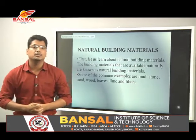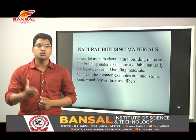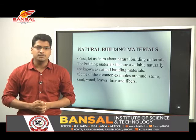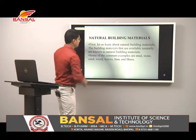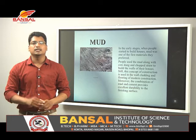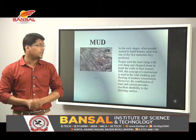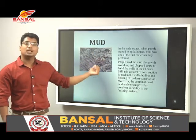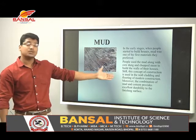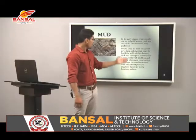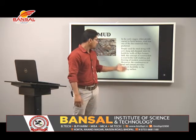Natural building materials are materials which are available naturally. Some common examples are mud, stones, sand, wood, leaves, fibers, etc. In the early stages, when people started to build their own houses, mud was one of the first materials they preferred. People used mud along with cow dung and chopped straw to build the walls of their houses. This concept of construction is still used in wall construction today. Moreover, the combination of mud and cement provides excellent durability and finishing surfaces.